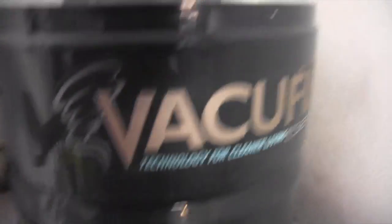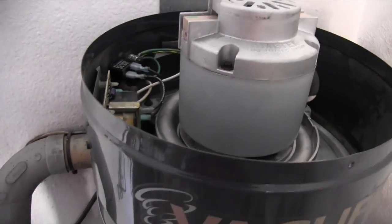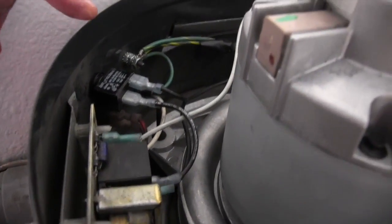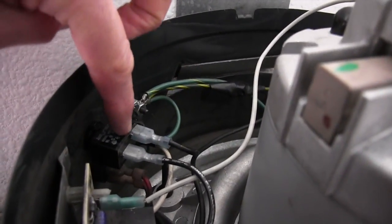Now we're going to find the little circuit breaker, and mine is on the left side of the machine as I'm facing it. I found the circuit breaker right here.